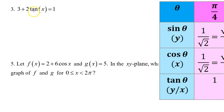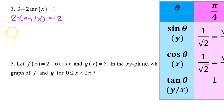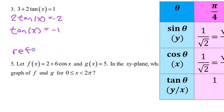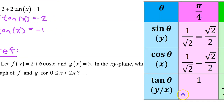For number 3, we need to get tangent x by itself. We begin by subtracting 3 from both sides. That gives us 2 tangent x is equal to negative 2. If we divide both sides by 2, we get tangent x is equal to negative 1. We can figure out the reference angle by asking ourselves: the tangent of what angle is equal to 1? We have memorized that the tangent of π/4 is 1, so the reference angle is π/4.